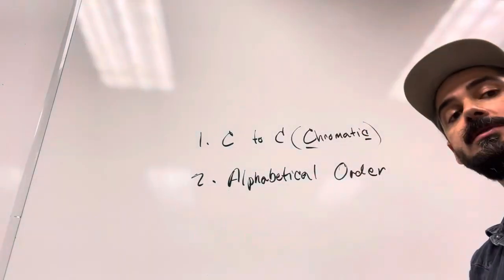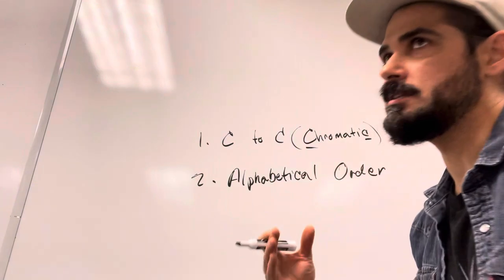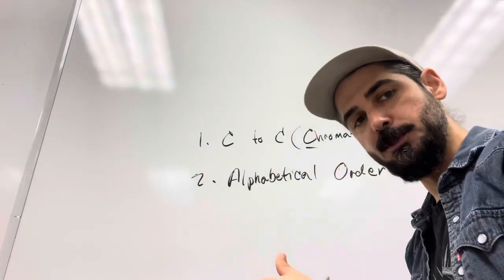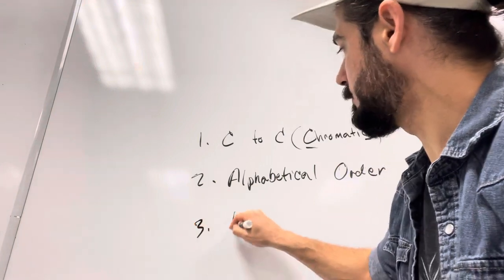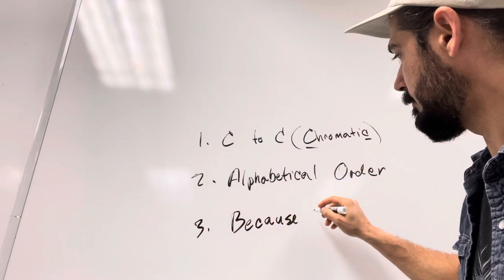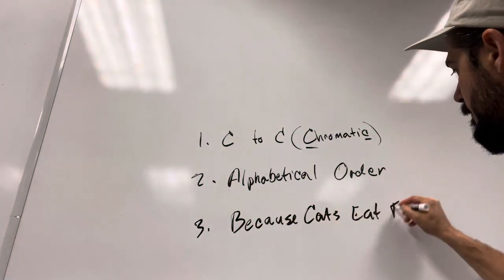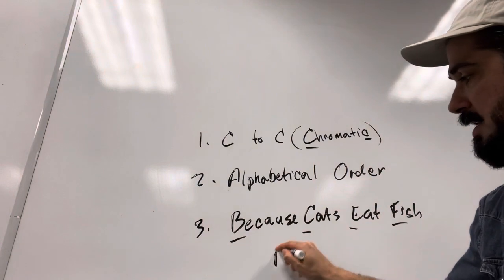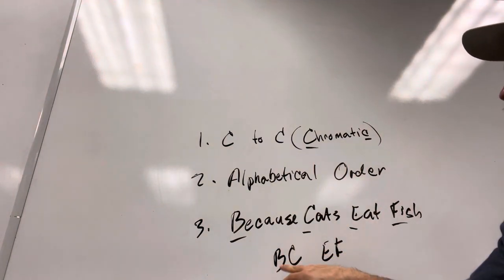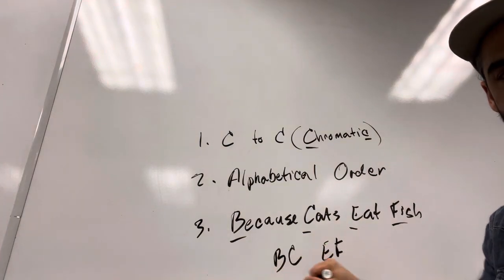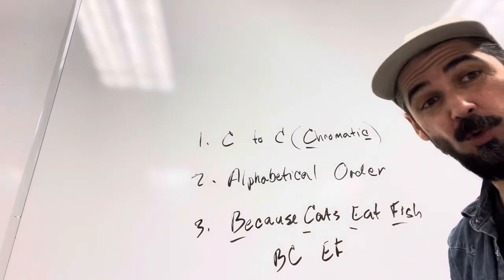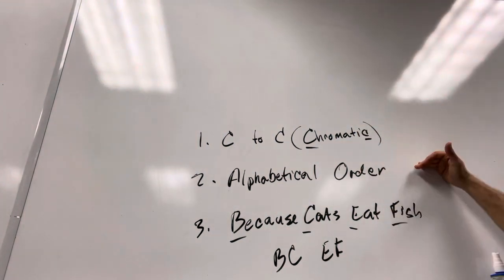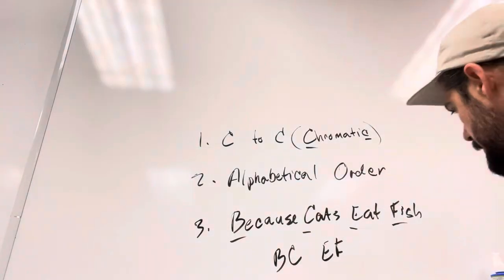A good way to remember that is the word chromatic begins and ends with C. That's a nice way to remember, a nice little trick there. Number two is the general order of it is alphabetical order. Meaning, after you deal with the C note, the next note you're going to deal with is a D note. The next note you're going to deal with is an E note. After that, remembering, of course, that the musical scale does not have an H note. It goes kind of from A, ends with G, starts over again on A. And then, number three, we have one of those mnemonic devices, because cats eat fish.